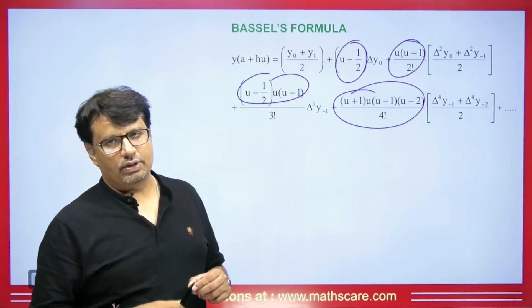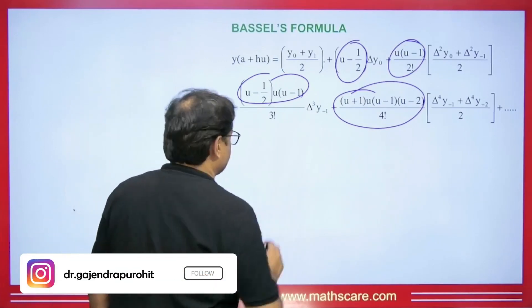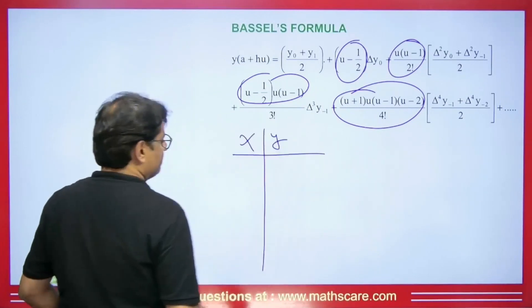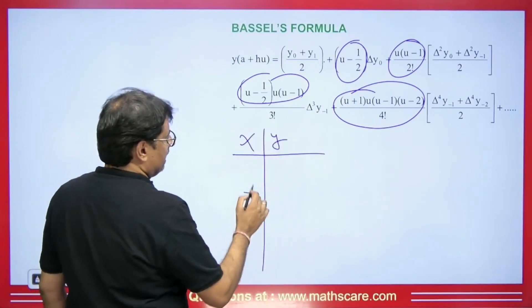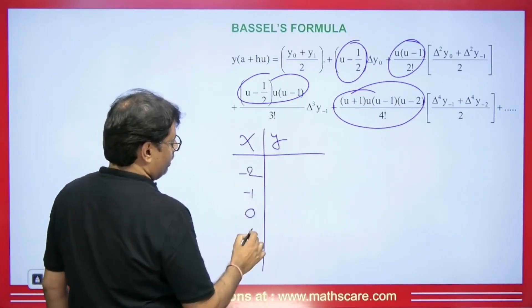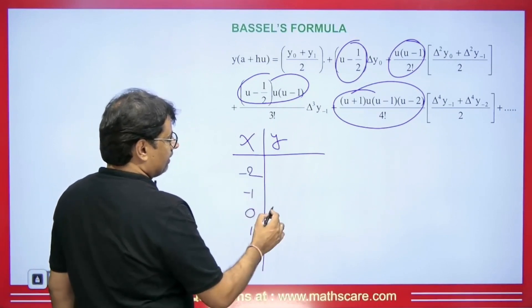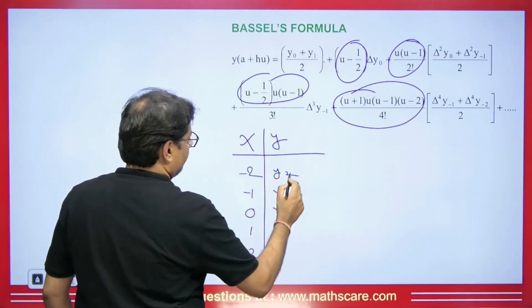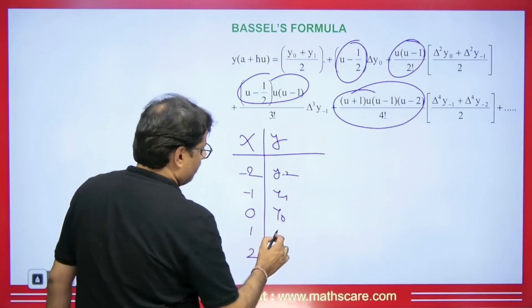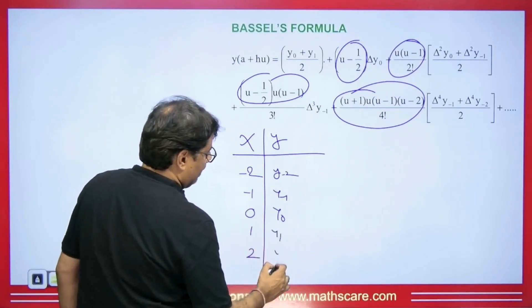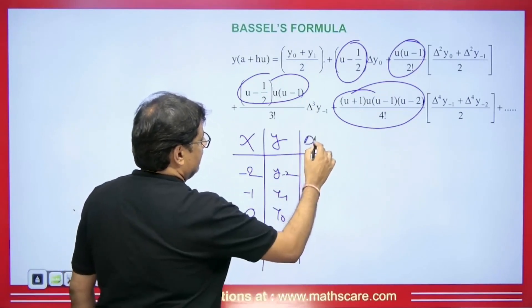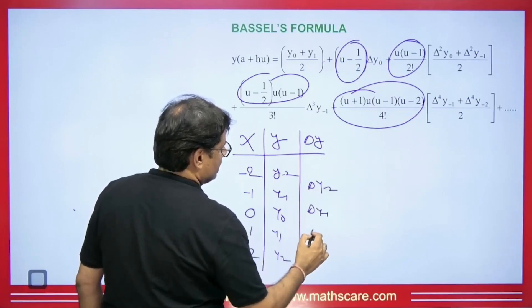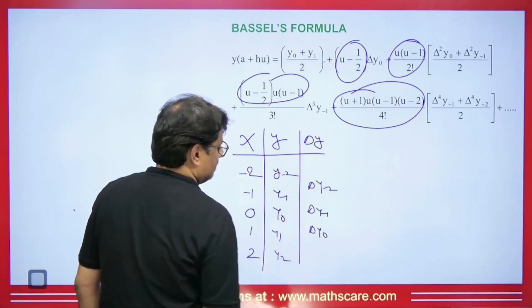You remember the last formula. So whenever we have X and Y, whenever we take the center's value, we take 0, then minus 1, minus 2, and this will be 1, 2. The corresponding values are Y0, Y minus 1, Y minus 2, Y1, and Y2. We will find del Y here: del Y minus 2, del Y minus 1, del Y0, and del Y1.